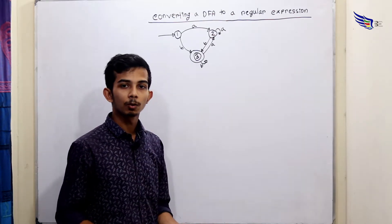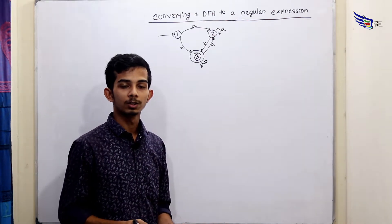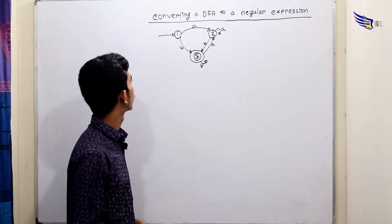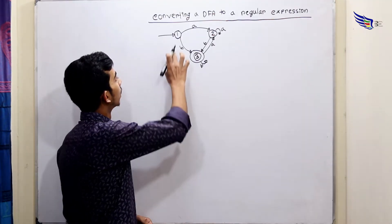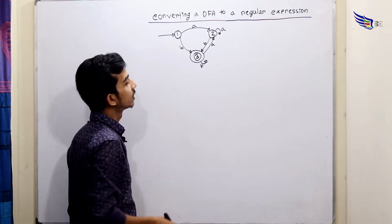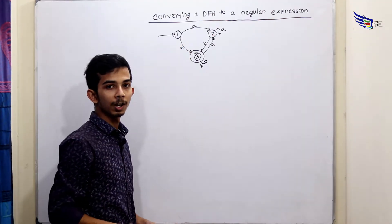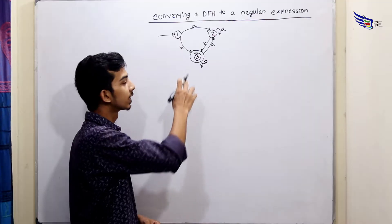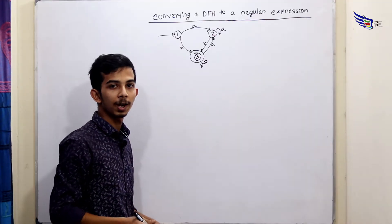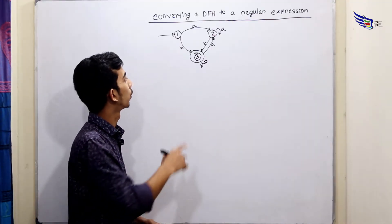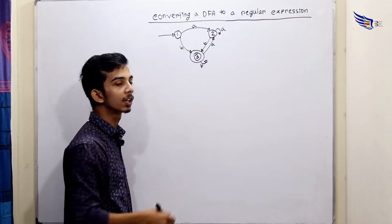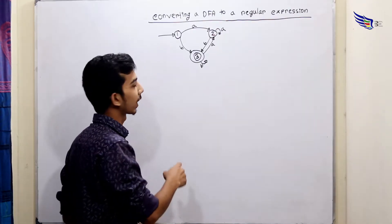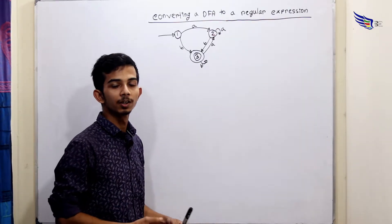How do we convert a GNFA? The first rule is that the start state has an incoming arrow. The whole machine has a single final state. The transition is a regular expression over the states. When converting the GNFA, we will remove states one at a time.